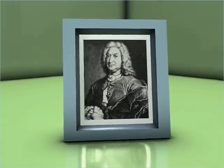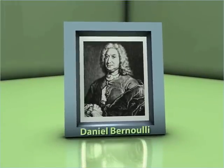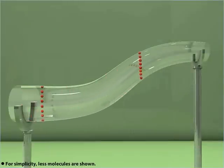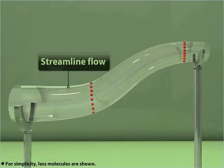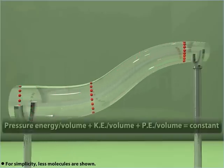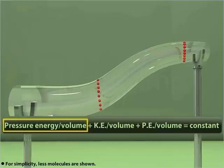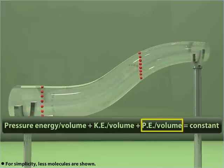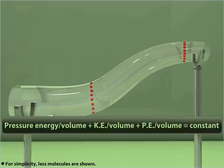The answer can be found by learning about Bernoulli's Principle. Bernoulli's Principle, given by Daniel Bernoulli, is an energy conservation principle. It states that for the streamlined flow of an ideal fluid, the total energy — that is, the sum of pressure energy per unit volume, kinetic energy per unit volume, and potential energy per unit volume — remains constant.